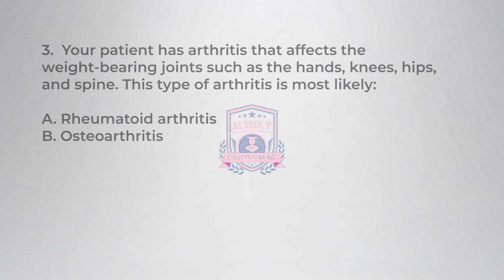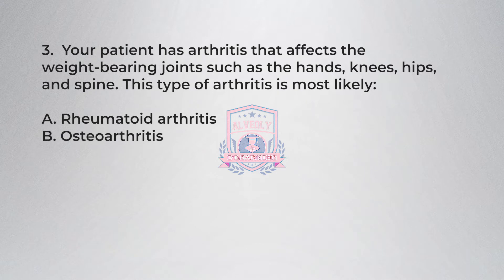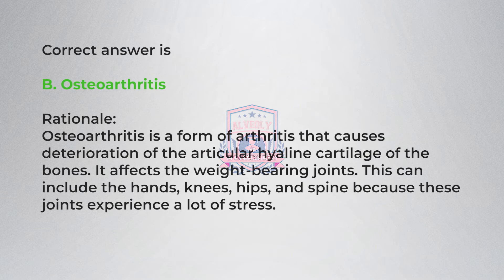Question three: Your patient has arthritis that affects the weight-bearing joints such as the hands, knees, hips, and spine. This type of arthritis is most likely: A) rheumatoid arthritis, B) osteoarthritis. Correct answer is B: osteoarthritis.